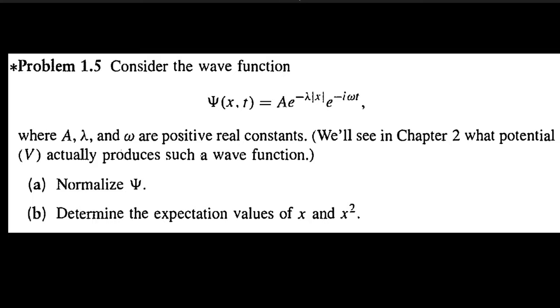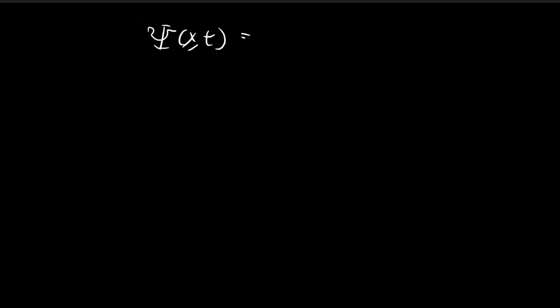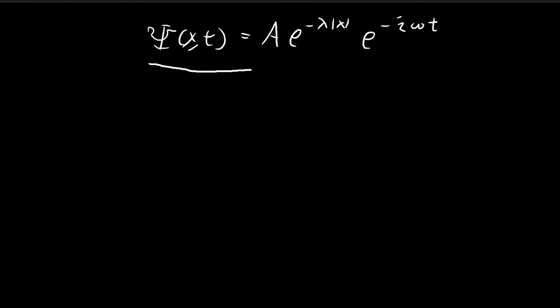In part a we want to normalize the wave function. The wave function as given by the problem is equal to this expression. In chapter 2 this is actually a solution for the Schrödinger equation for the case of the Dirac delta potential, so you'll see where this comes from in the next chapter. For now, we already know what the wave function is and we want to normalize it.